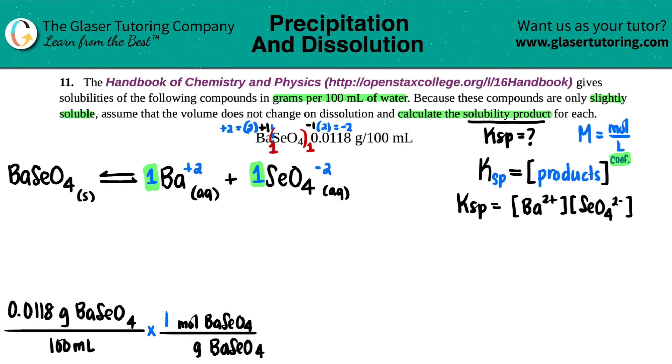Let's see. Ba 137.3 plus one selenium. That's 78.97. And then I got four oxygens, four times 16. So I got 280, 280.27.